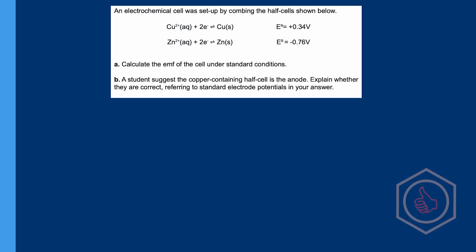An electrochemical cell was set up by combining the half cells shown below. Calculate the EMF of the cell under standard conditions. To tackle this question we need to remind ourselves what we mean by EMF, or electromotive force. It's basically what we call the E-cell — the total potential difference across the cell between the two electrodes. To calculate the E-cell, we take the electrode potential of the reduction half cell and subtract the electrode potential of the oxidation half cell: E-cell = E-reduction minus E-oxidation.